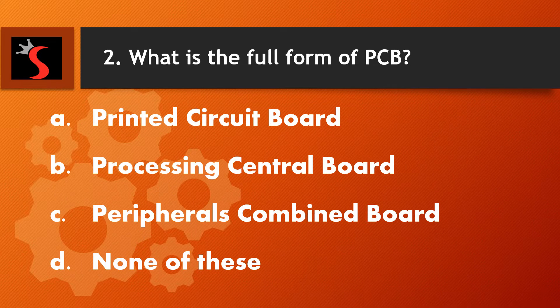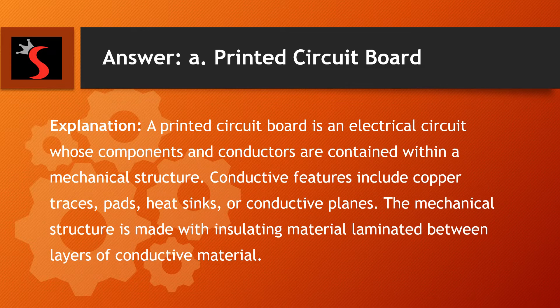The second question is: what is the full form of PCB? A. Printed Circuit Board. B. Processing Central Board. C. Peripherals Combined Board. Or D. None of these. And the right answer is Printed Circuit Board. Explanation: a printed circuit board is an electrical circuit whose components and conductors are contained within a mechanical structure.